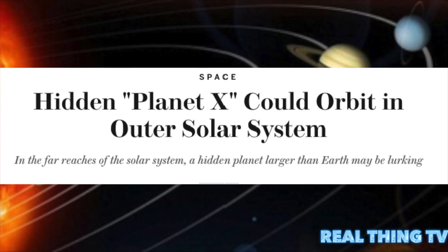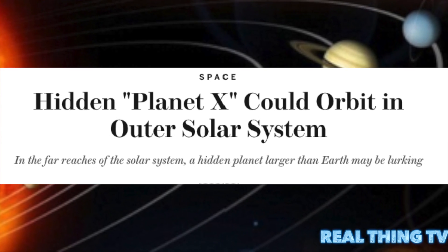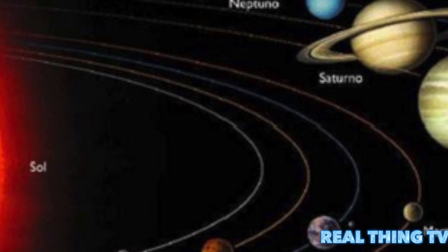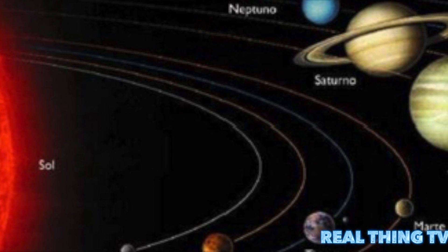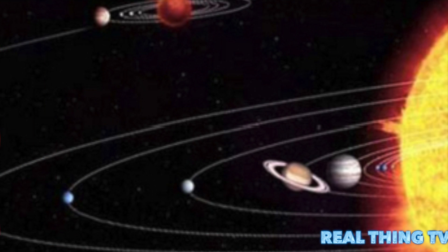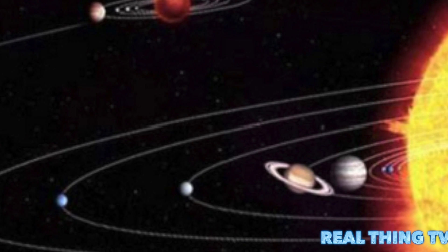In the far reaches of the solar system, a hidden planet larger than Earth may be lurking. Something very odd seems to be going on out beyond Pluto. Astronomers have known for more than two decades that the tiny former planet is not alone at the edge of the solar system.